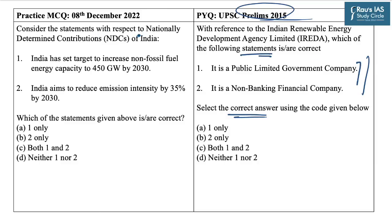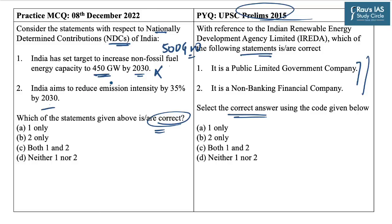On similar lines, we have designed one practice MCQ on Nationally Determined Contributions of India. Statement 1 says India has set a target to increase non-fossil fuel energy capacity to 450 gigawatts by 2030. Statement 2 says India aims to reduce emission intensity by 35% by 2030. Statement 1 is incorrect — India has increased its commitment to 500 gigawatts by 2030, not 450. Statement 2 is also incorrect — India aims to reduce emission intensity by 45%, not 35%, by 2030. So the answer is D — neither 1 nor 2.